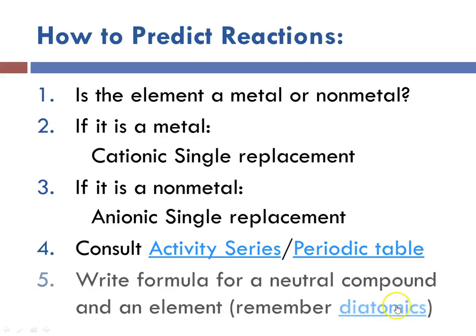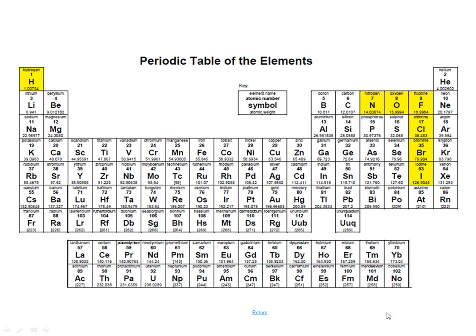Once you've consulted your activity series to decide whether the reaction can take place, you're going to write formulas for the neutral compound and the element. If the element is one of the 7 diatomic elements, you have to remember to write it as a diatomic element — H₂, N₂, O₂, etc.